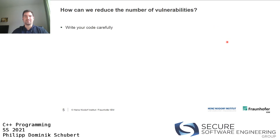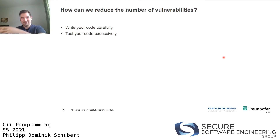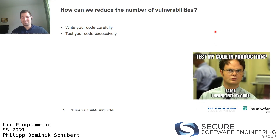How can we reduce the number of vulnerabilities? First, write your code when you are most concentrated - write it carefully. Once you've written your code, test it to see if it does the expected thing. You can employ unit tests to ensure correctness, at least to some extent, nailing down that the program has the exact behavior specified in your tests.